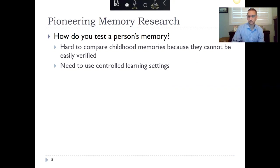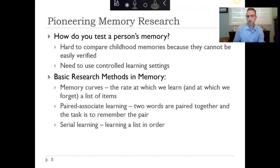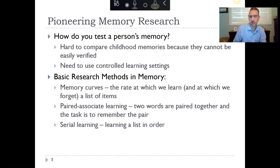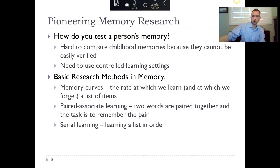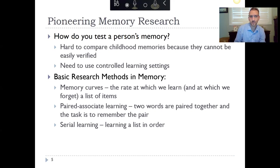The basic memory methods include memory curves — this is the rate at which we learn and at which we forget a list of items. If I presented a list of 20 items and read through them one at a time, you're probably not going to remember all 20. The first time you hear it you might recall seven or eight if you've got a strong memory, then nine or ten, eleven or twelve after that. So there's a rate at which you learn.